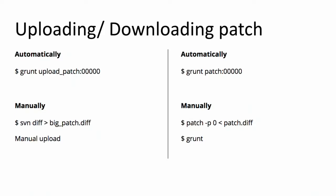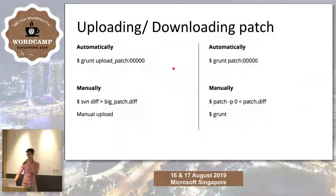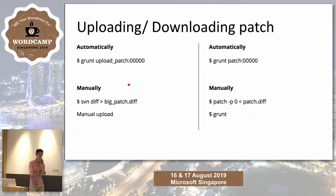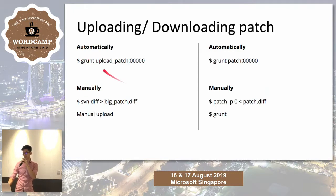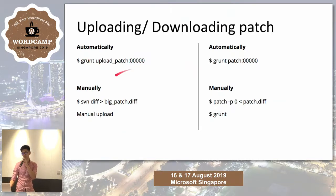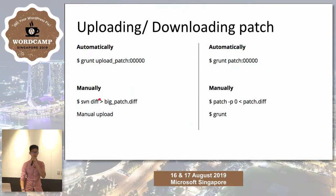Now that you've fixed the ticket, you need to put your work out there. There are two ways: upload a patch, or download a patch — for example, if someone else is working on a patch and you want to apply it to your system to write unit tests or verify it works. In this case, I fixed it with a patch. You can either use Grunt to upload the patch with the ticket ID, or do it manually with svn diff, save it to a .diff file, and manually upload it on the website.